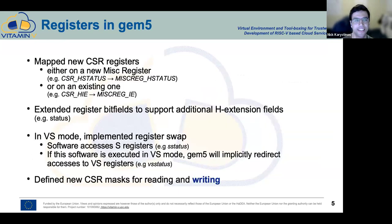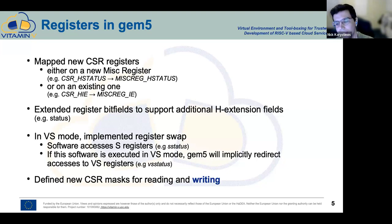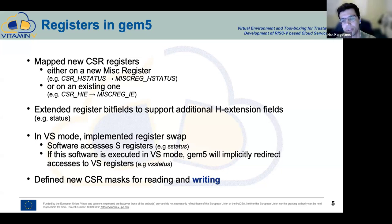For the registers, we've mapped all new CSR registers detailed in the specification. These are either new misc registers — for example, hstatus, the hypervisor status register — or aliases backed by one bigger misc register. For example, hypervisor interrupt enable is mapped into the misc register interrupt enable, which carries all interrupt enables for different privileges with different masks. We also extended register bit fields to support fields required by the hypervisor extension.